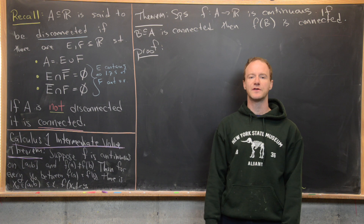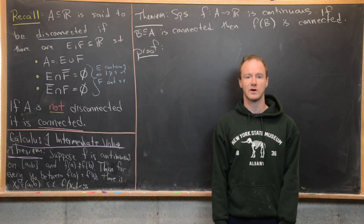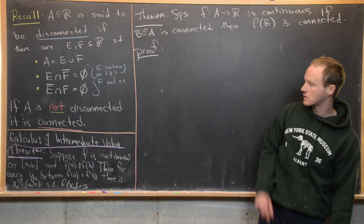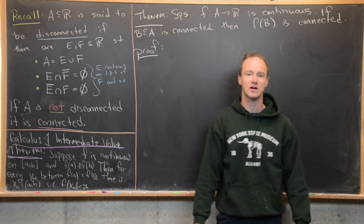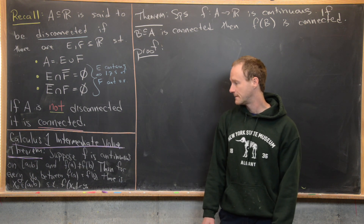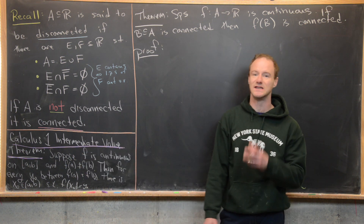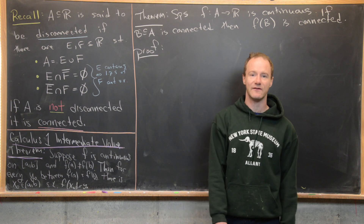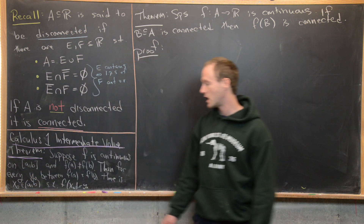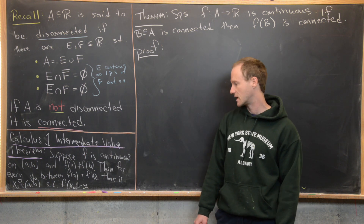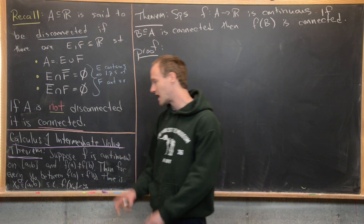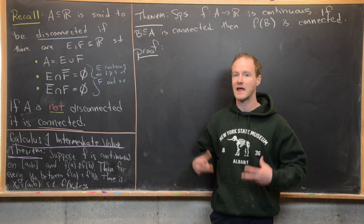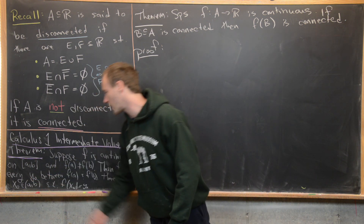I also want to recall the Intermediate Value Theorem from a Calculus 1 type class, because the big theorem we're going to prove in this video will imply it as a corollary. The Intermediate Value Theorem says that if you have a continuous function on a closed interval [A, B] and F(A) is not equal to F(B), then for every Y₀ between F(A) and F(B), there is an X₀ on the open interval (A, B) such that F(X₀) = Y₀. So Y₀ is the intermediate value, and we are able to achieve that intermediate value somewhere on the open interval.